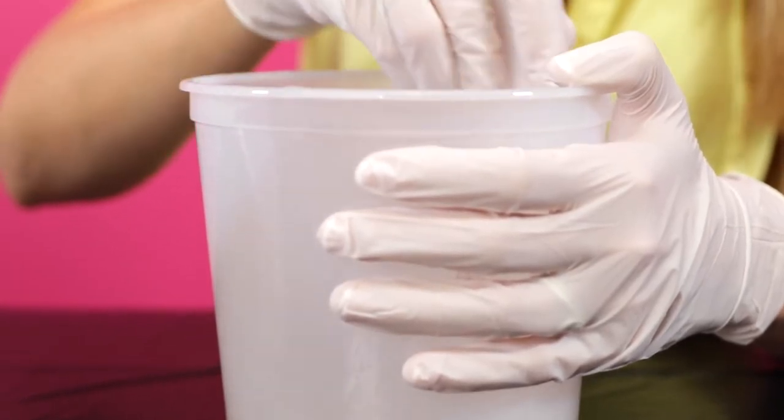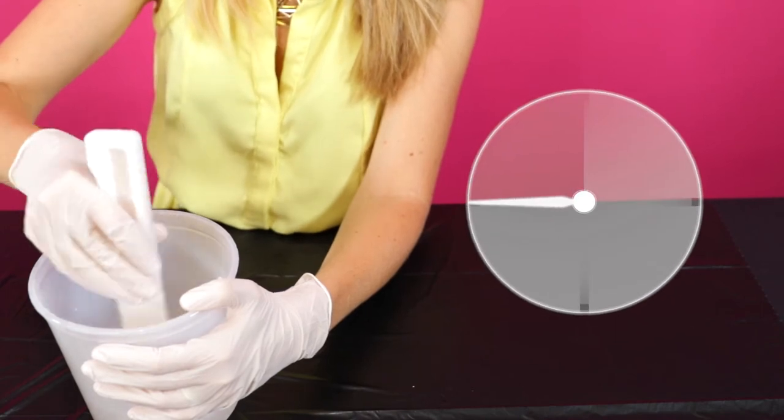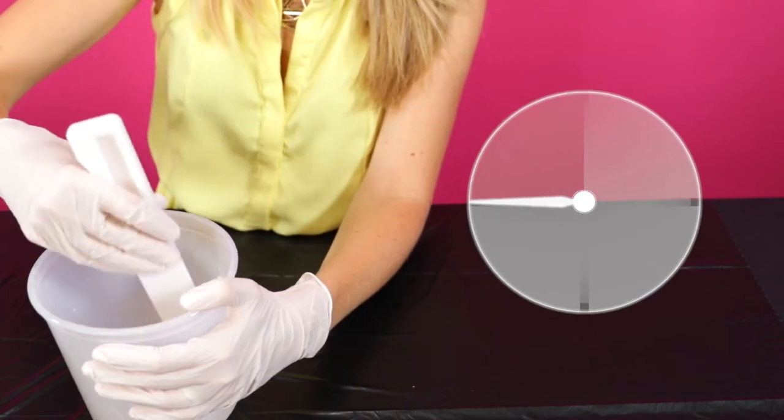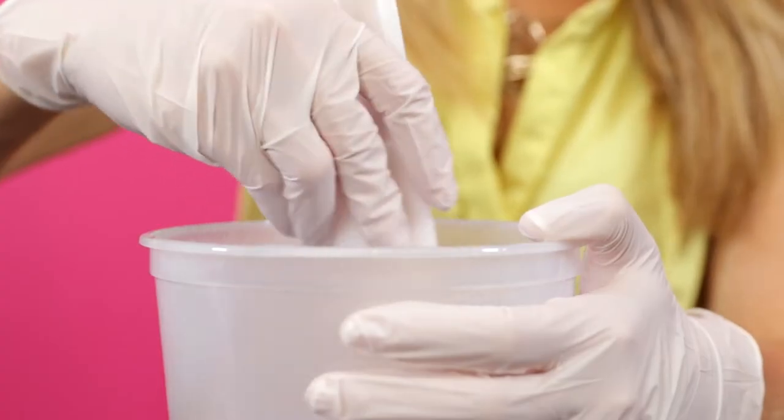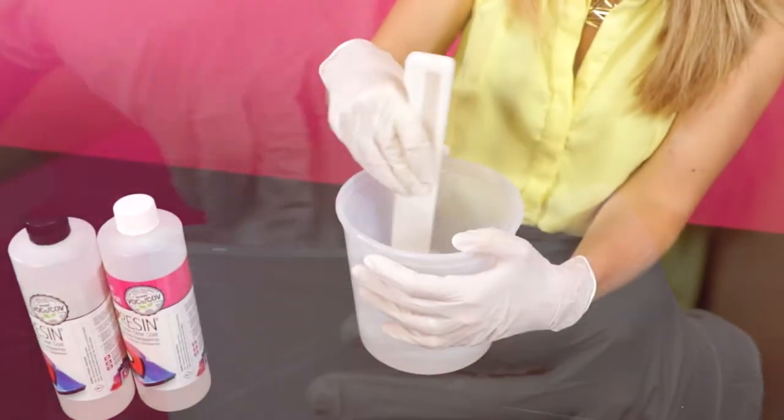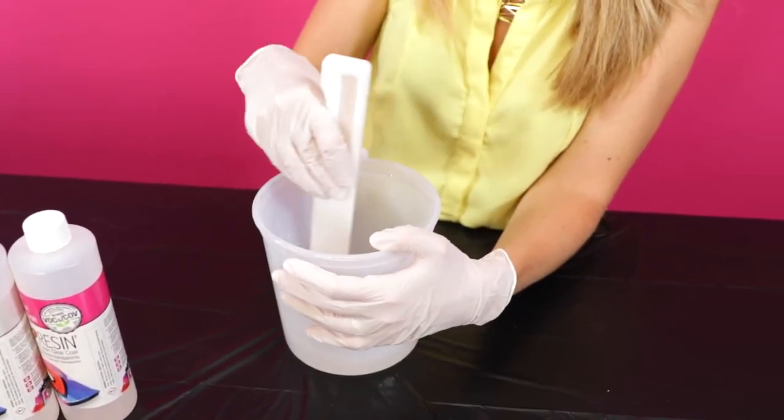Once you've mixed both the resin and hardener together, you'll have about 45 minutes of working time to spread it before it starts to cure. If your mixture is warmer than room temperature, your working time and cure time will be decreased.